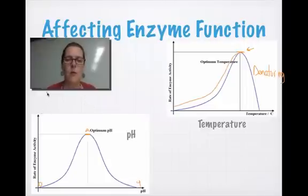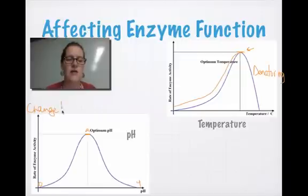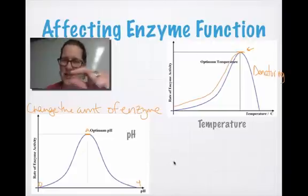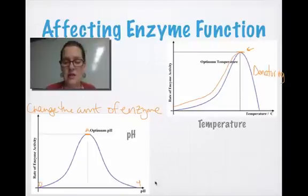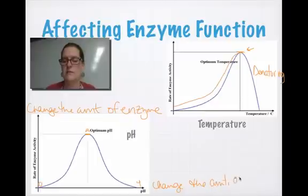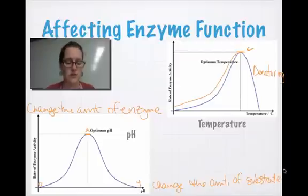There are other ways to increase or decrease the rate of enzyme function. I can change the amount of enzyme — it only takes a small amount because enzymes work really fast, but changing that amount changes the rate. I can also change the amount of substrate: put more in and it'll react faster. Those are different ways to affect the rate of enzyme function.